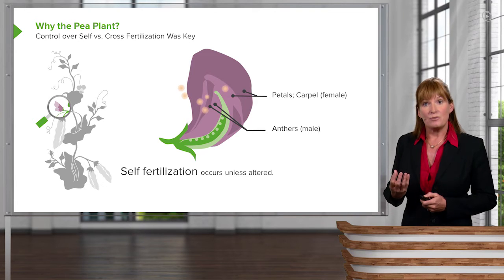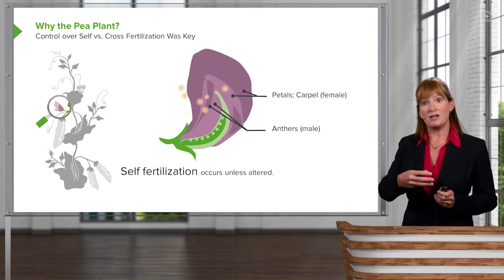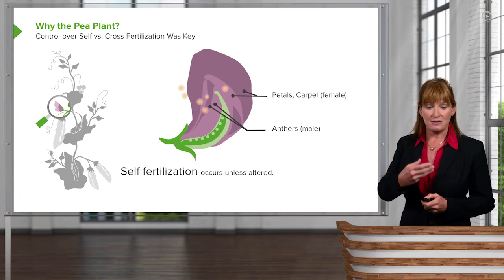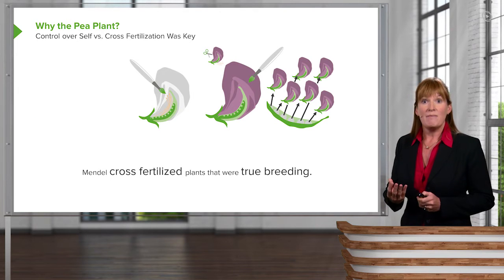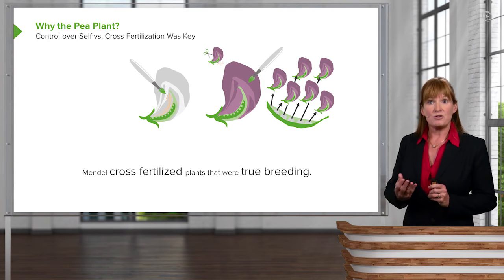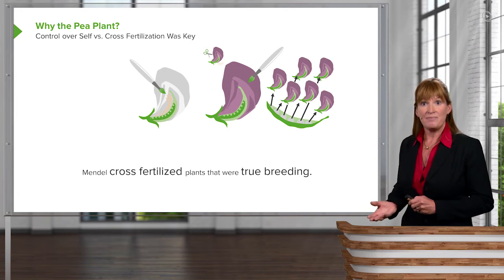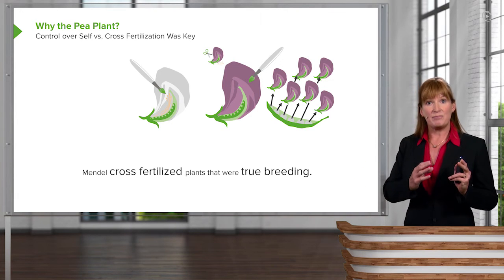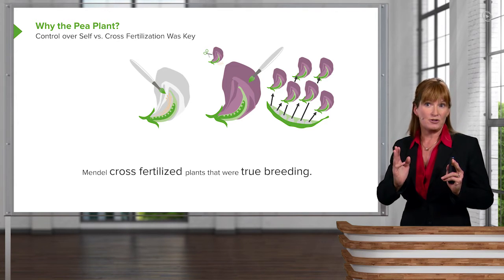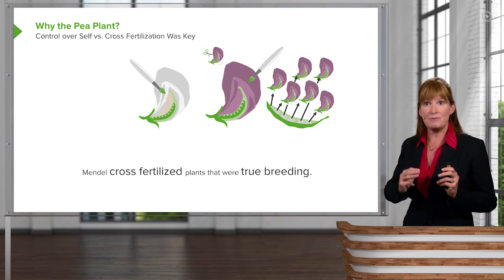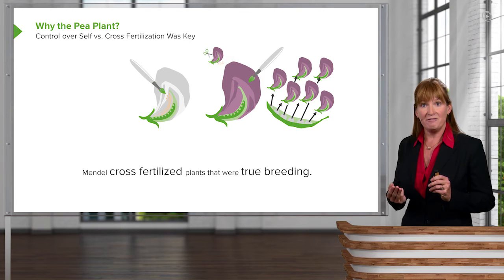Self-fertilization would be the normal case. You could easily self-fertilize by pollen coming from the anthers and brushing straight onto the carpels of that same flower. Mendel, though, wanted to be able to cross-fertilize as well as self-fertilize. And in this case, he would take pollen from one true breeding plant and apply it to another true breeding plant. Because he was able to remove the anthers, he could stop self-fertilization.